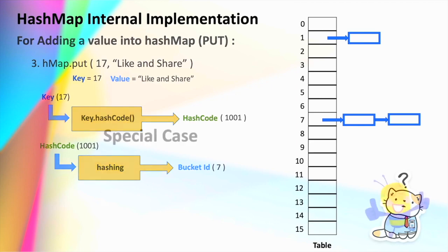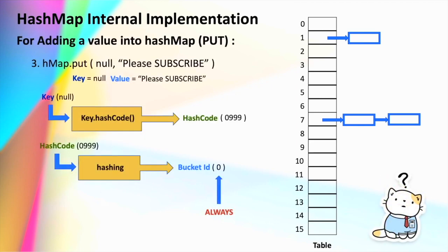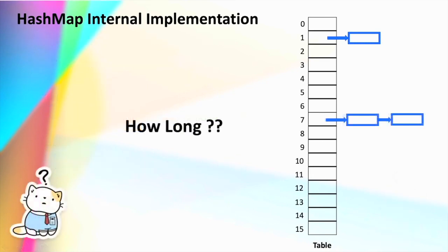Now let's consider the special condition of inserting a null value as a key. Whenever we insert a null key into the HashMap, it generates a hash code and from there generates the corresponding bucket ID, which is always 0. So whenever you insert a null value as a key, it will always map to bucket ID 0 — and that is the only reason why you can insert only one null key within the HashMap.